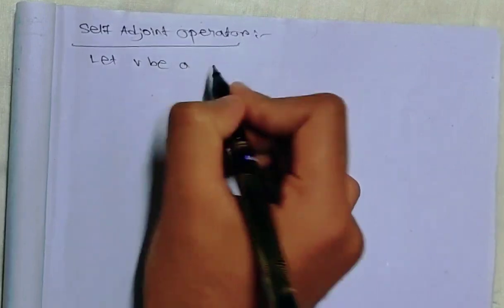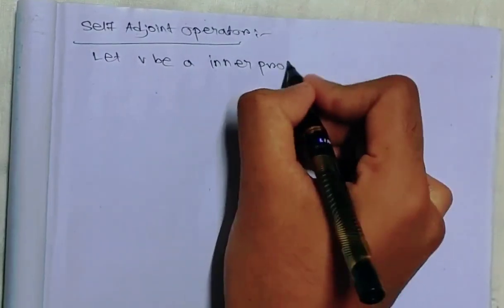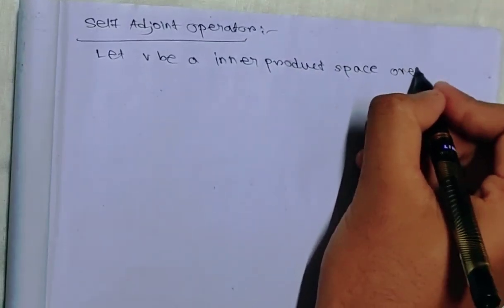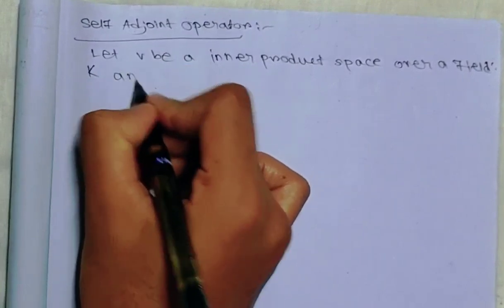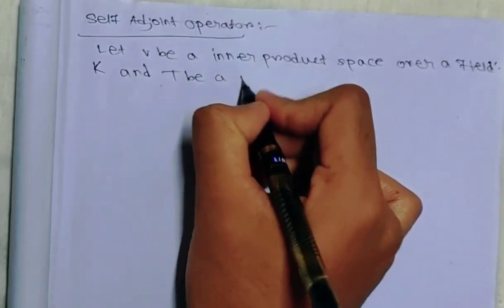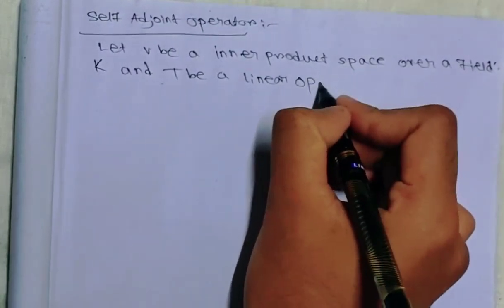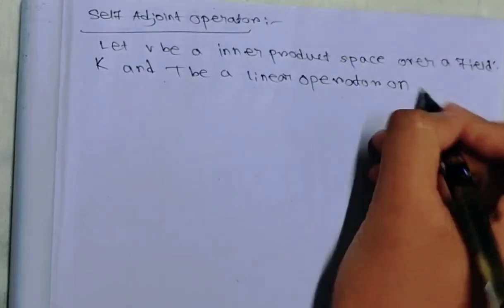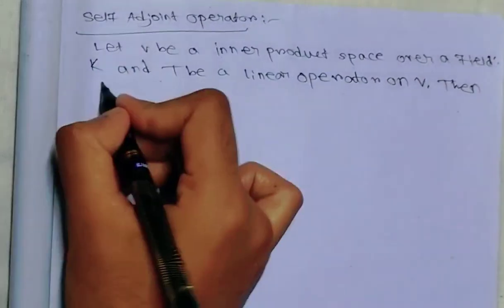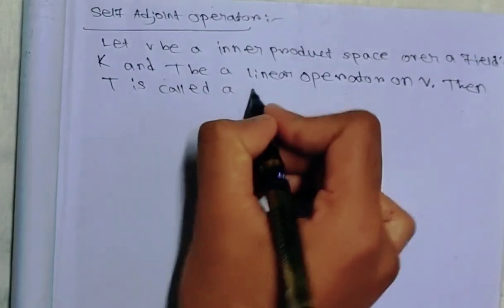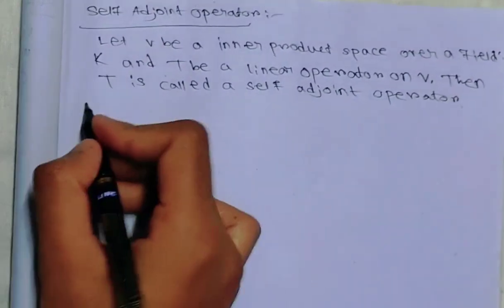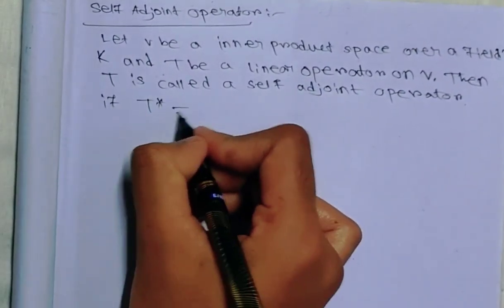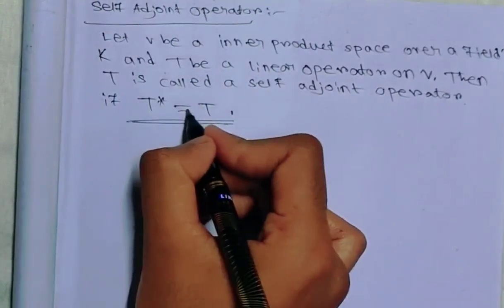Today we are going to start self-adjoint operators. First of all, the definition: let V be an inner product space over a field K, and let T be a linear operator. Then T is called a self-adjoint operator if T star equals T. So we just have to show that T star equals T.